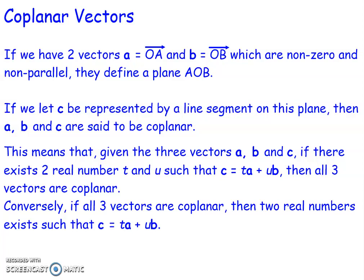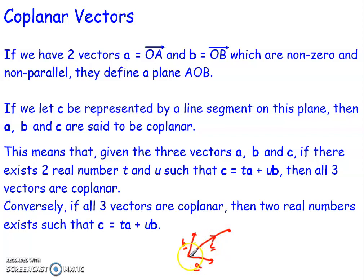What this means is if we've got three vectors A, B, and C, there are two numbers that exist — let's call them T and U — such that C is some combination of T times A plus U times B. So some combination of a multiple of A plus a multiple of B. All three vectors then are coplanar. Conversely, if all three vectors are coplanar, then these two real numbers exist such that C equals T times A plus U times B.